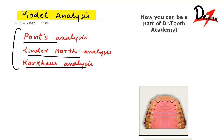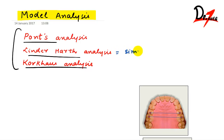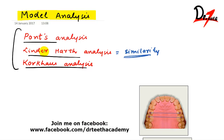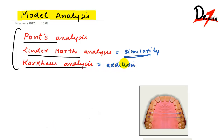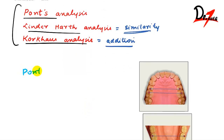Pons analysis will be the first one. I would like to call the Linder-Hearth analysis the 'Linder-Hearth similarity' because it is very similar to the Pons analysis. And I would call the Corcus analysis 'Corcus addition' because he made an analysis similar to these two but added one more thing. So let's study the Pons analysis first.